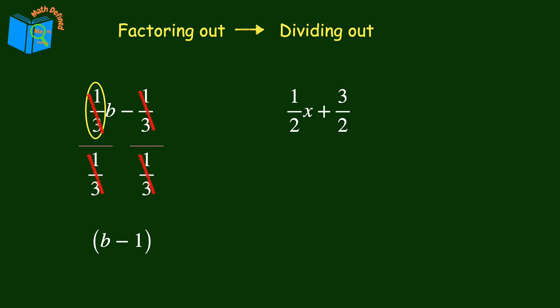The last step is to place the coefficient one-third outside of the parentheses. And now this expression has been rewritten in factored form, the coefficient one-third times the quantity b minus 1.